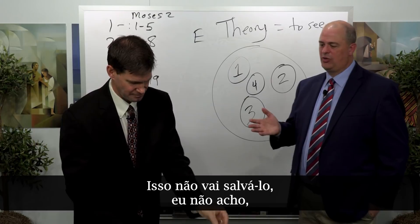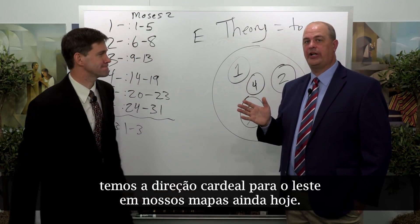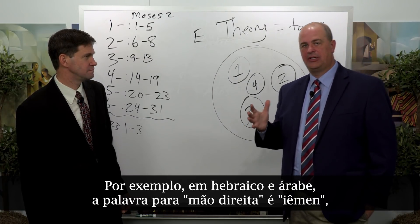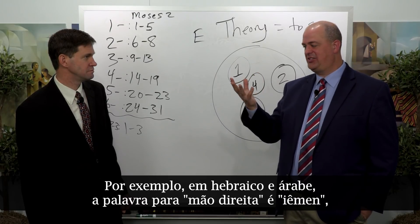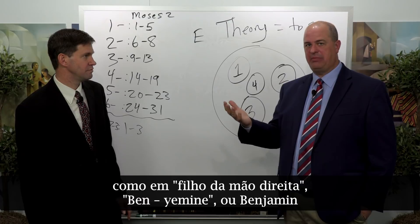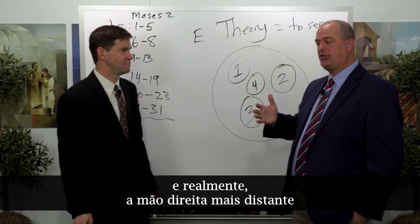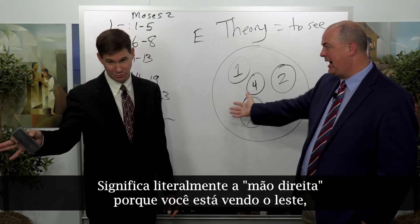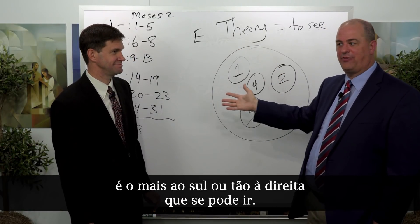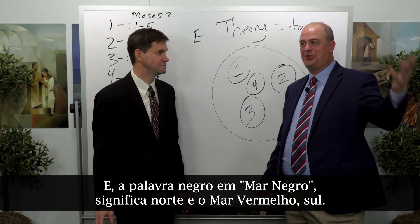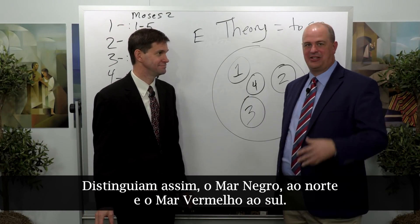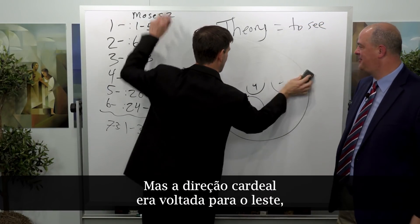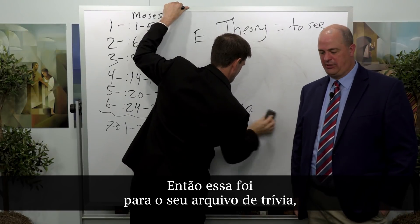The eastward-facing cardinal direction shows up in our maps still today. In Hebrew and Arabic, the word for the right hand is 'Yemen' — like in the word 'son of the right hand,' Ben Yamin or Benjamin. And the farthest right or south Arab country is Yemen — it literally means the right hand, because if you're facing east, it's as far south or far right as you can go. The word 'black' as in Black Sea means north, and the Red Sea means south — that's how they would distinguish. The cardinal direction again is facing east.